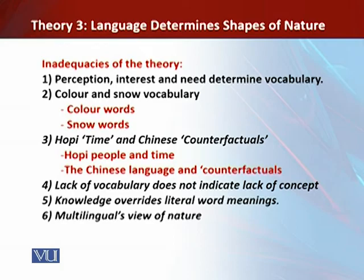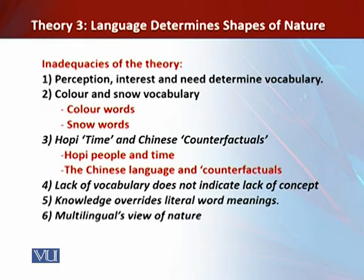The fourth point is that lack of vocabulary does not indicate lack of concept. We can describe a thing that has no single word for it using a phrase carrying a similar concept. For example, we have a name for the underside of our hand — the palm — but we have no single word for the top side; instead we use the phrase 'back of the hand.' This shows that a missing vocabulary item is not indicative of a missing concept.